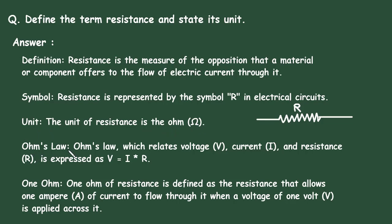Ohm's law: Ohm's law, which relates voltage V, current I, and resistance R, is expressed as V = I × R. This is called Ohm's law.